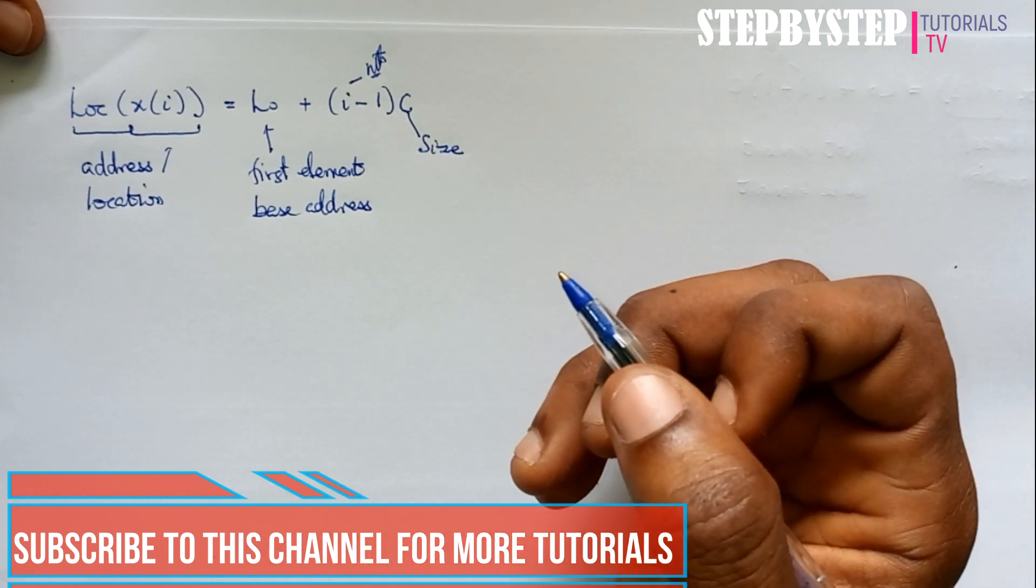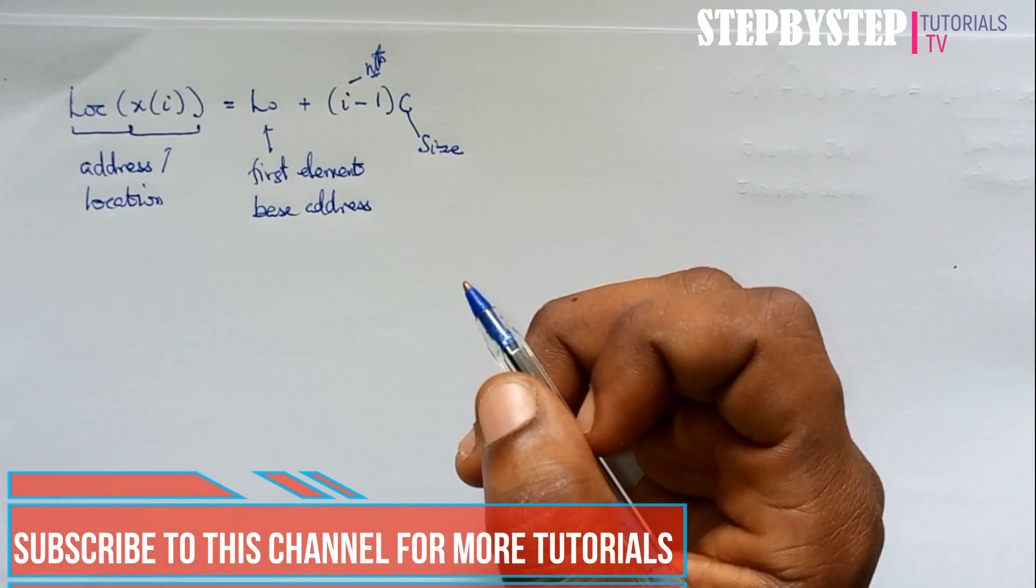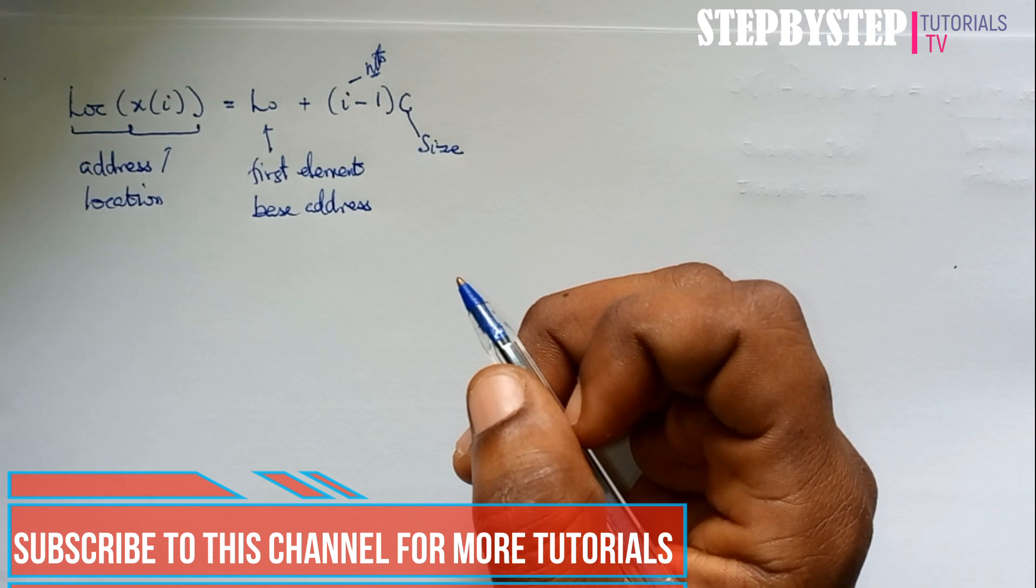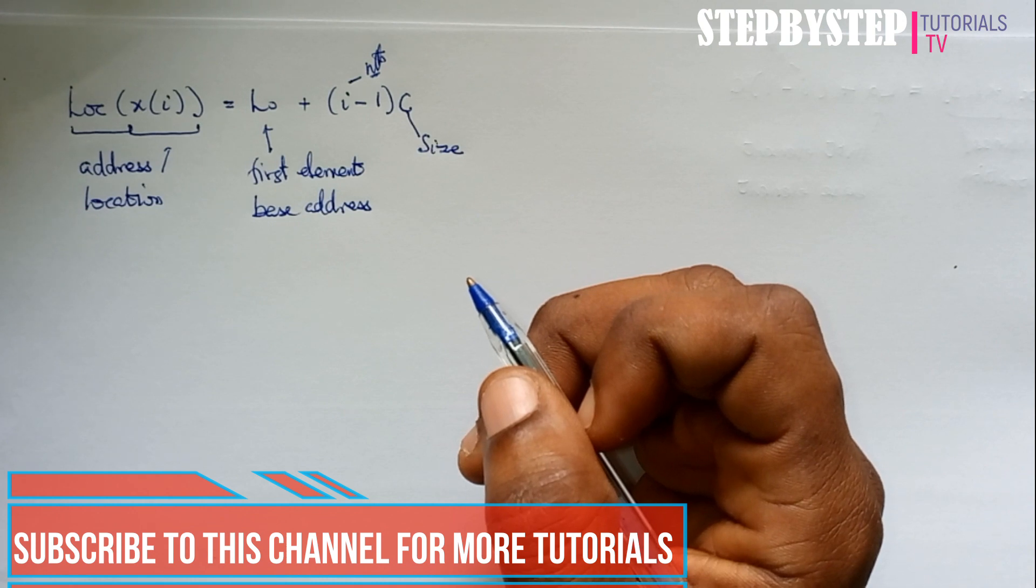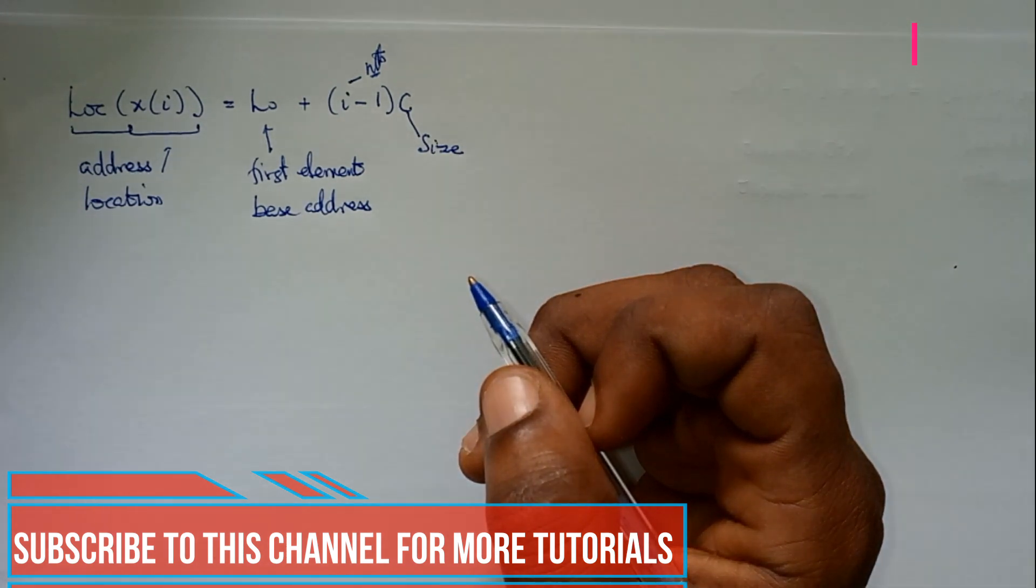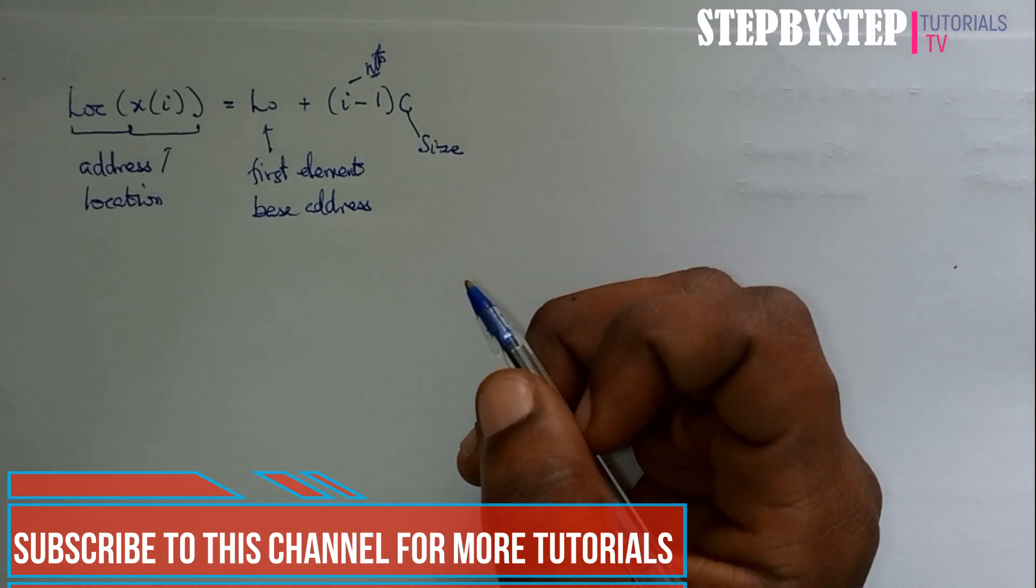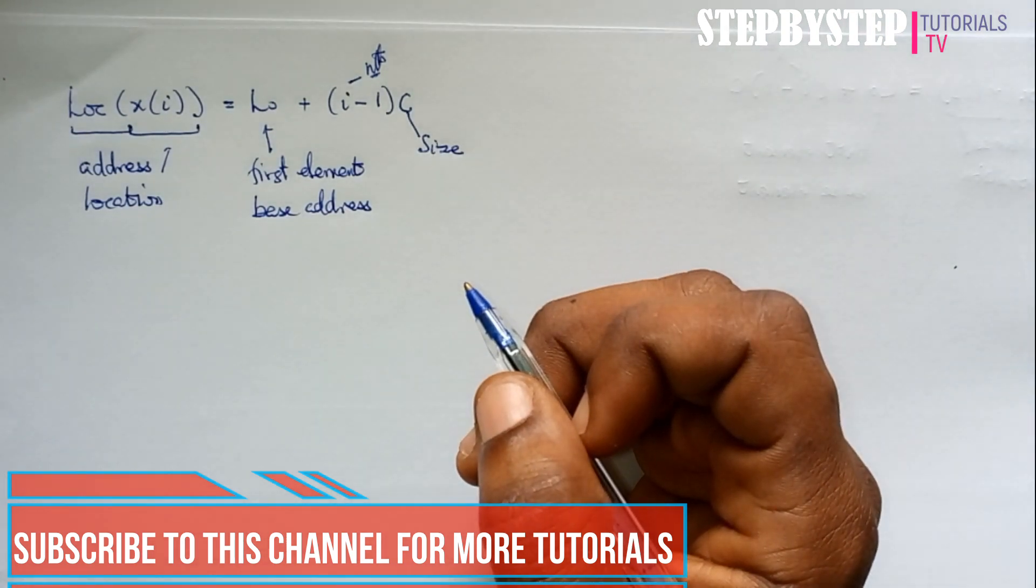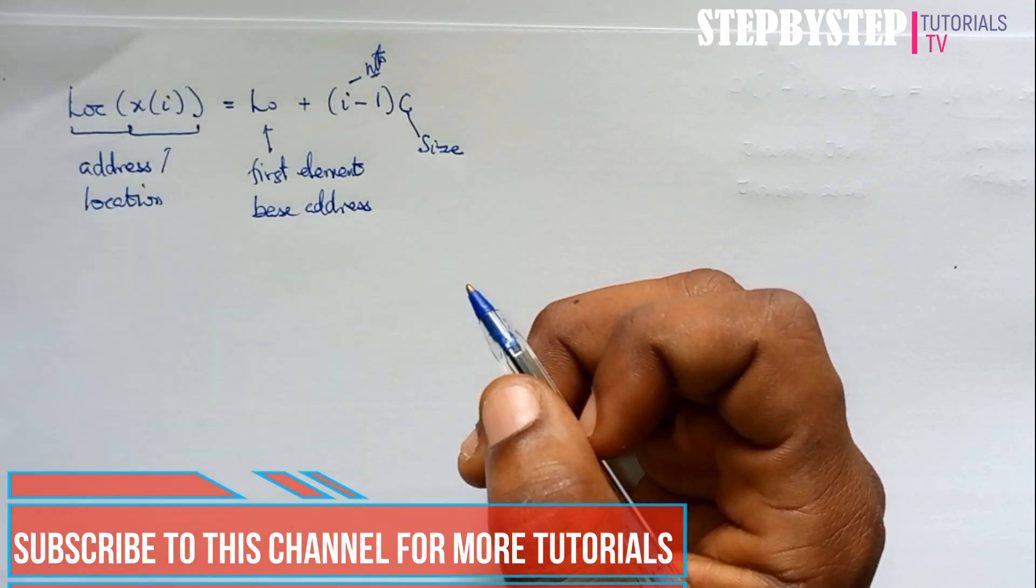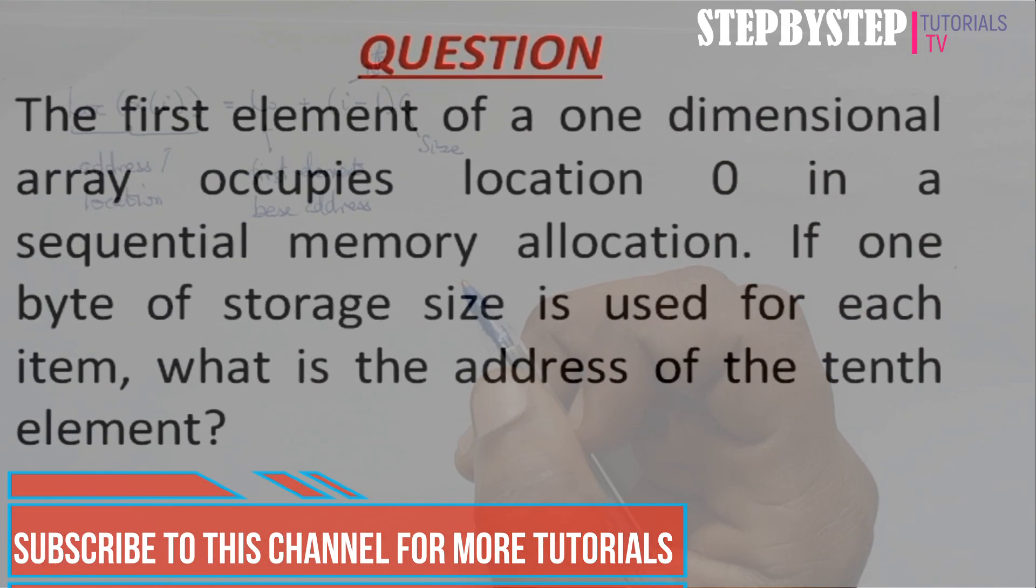Let's take a quick example of how to find the address of a particular item in a linear list. We are dealing with sequential location of storage for a linear list. Example 1: The first element of a one-dimensional array occupies location zero in sequential memory allocation. If one byte of storage size is used for each item, what is the address of the 10th element?